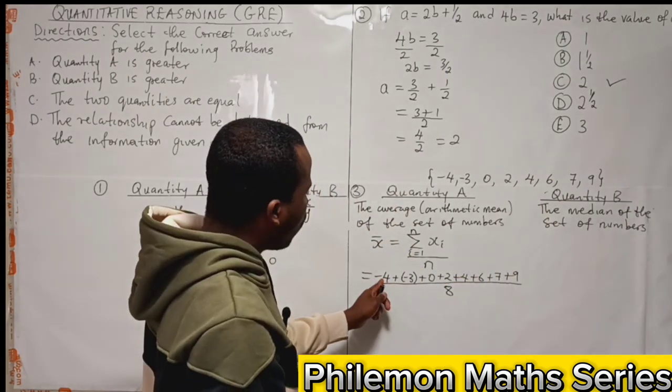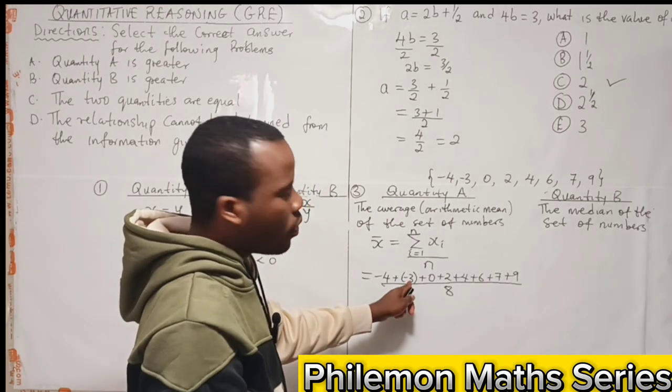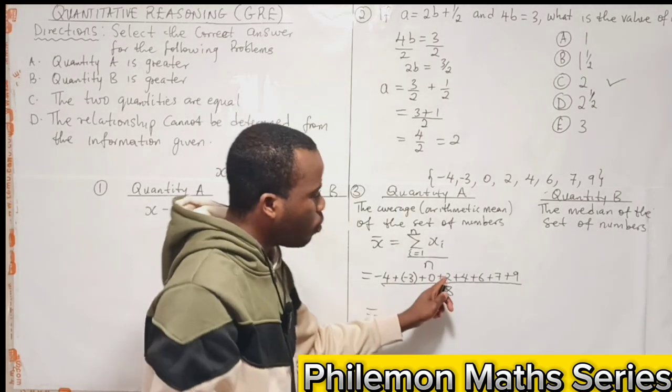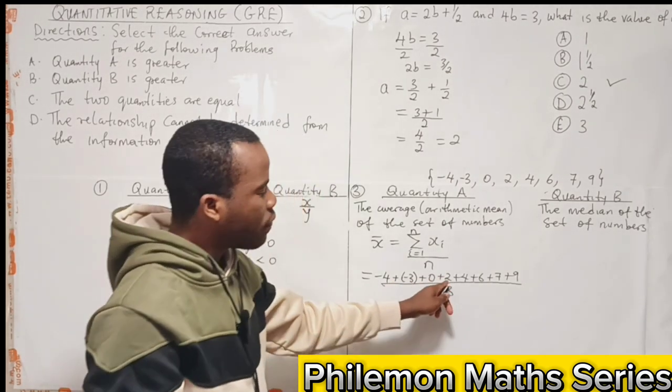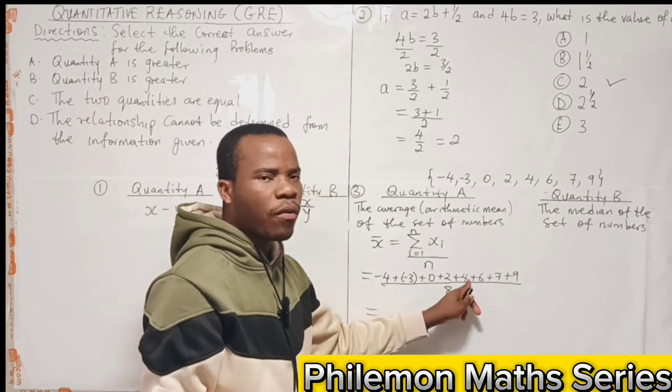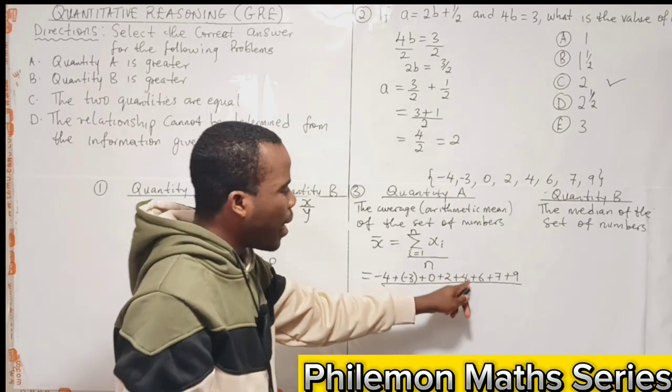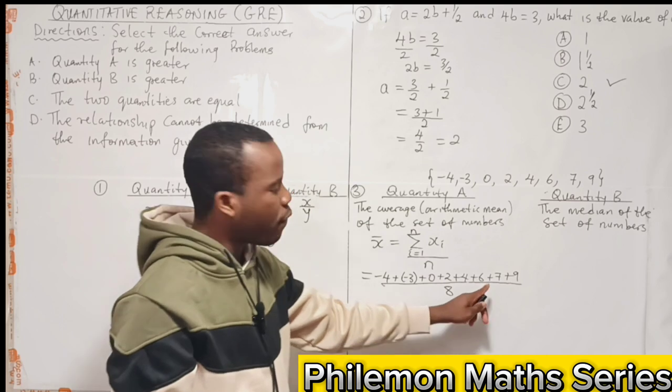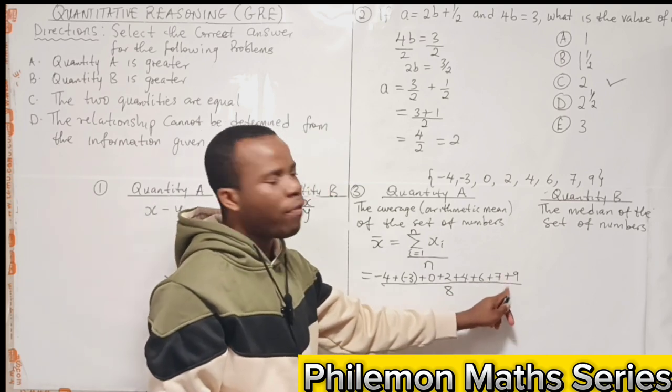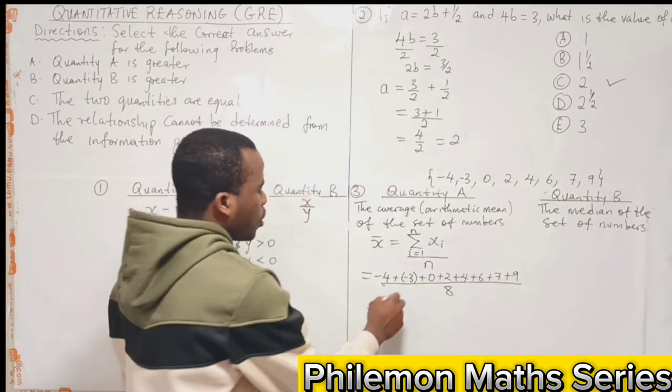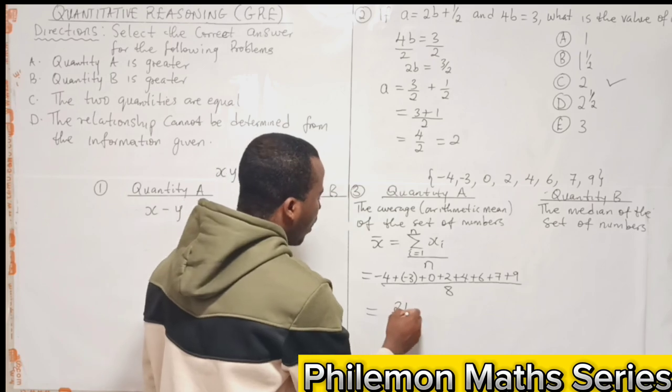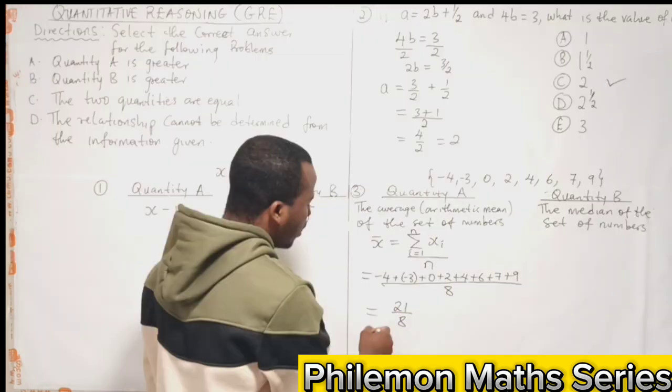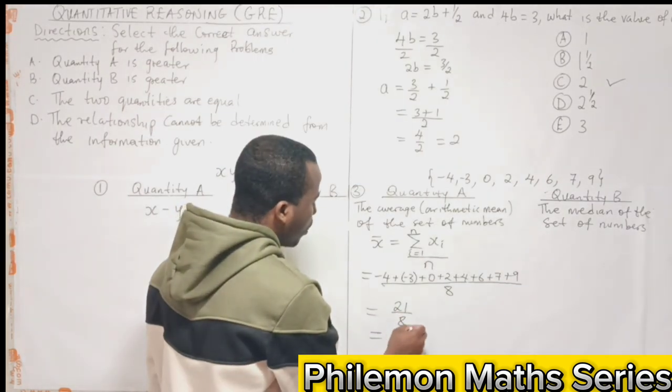So -4 - 3 is -7, and -7 + 2 is -5. -5 + 4 is -1. -1 + 6 is 5. 5 + 7 is 12, and 12 + 9 is 21. So we have 21/8, and 21/8 will give us 2.6.